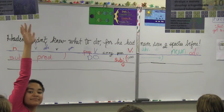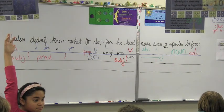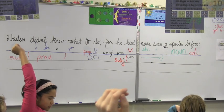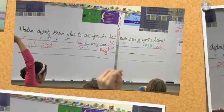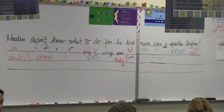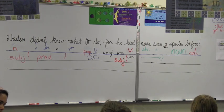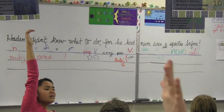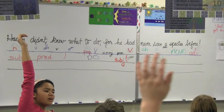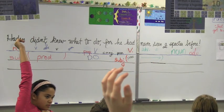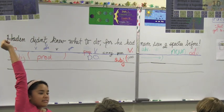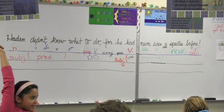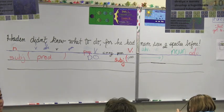Let's go on to the next clause. We've got a subject predicate. What kind of predicate do we have? In the second clause, we have an action verb. Now, what question would we ask to find out about a direct object? He had never seen what? Is there a clear answer to that, Emory? A specter. Very good. There's your direct object. Would you please go ahead and identify it?